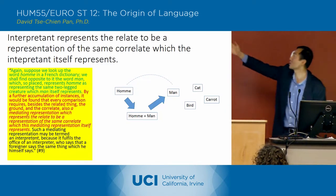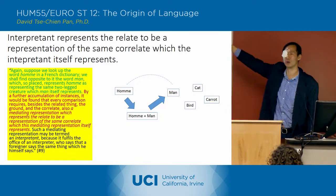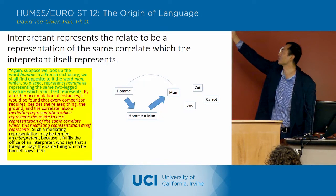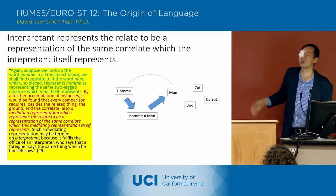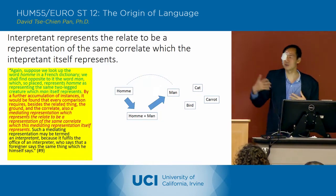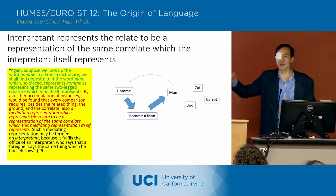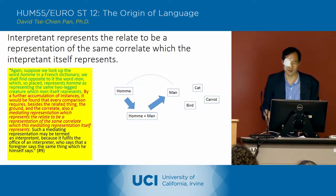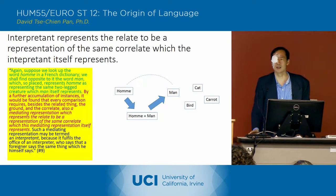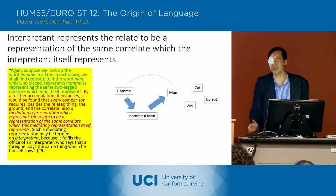As opposed to pointing to some other word — it could be, you know, he pointed to 'cat' or 'bird' or something like that. But no, it's pointing to 'man', and it's defining that relationship.